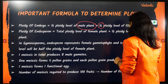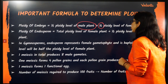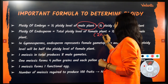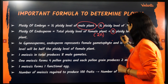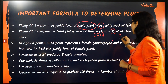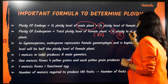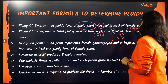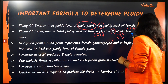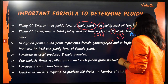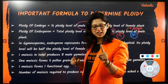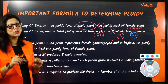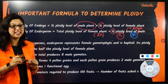Endosperm is always triploid. The total ploidy level of the female plant, which will be 2N, plus half the ploidy level of the male, which will be N, will give 3N in angiosperms. Never forget this, never make an error. Therefore it is triploid — the primary endosperm nucleus is triploid in angiosperms.